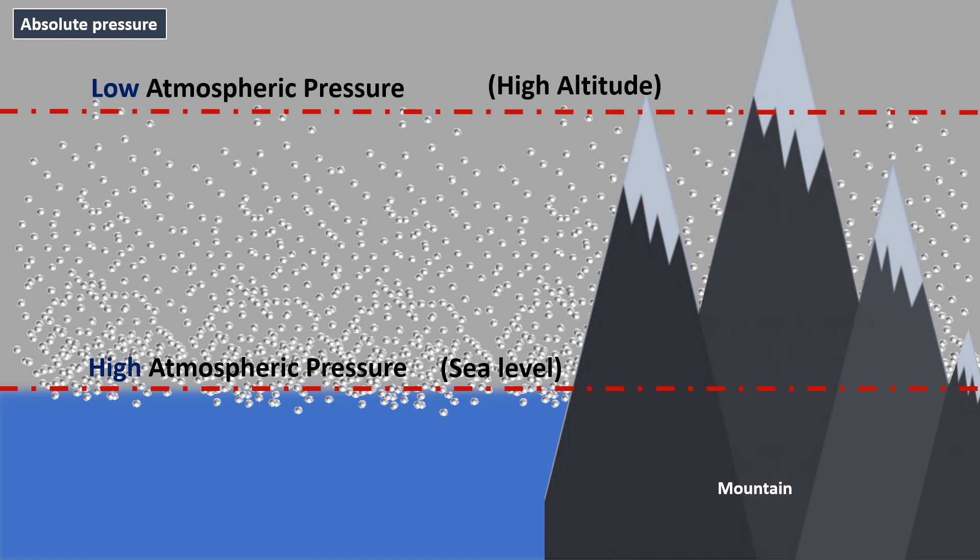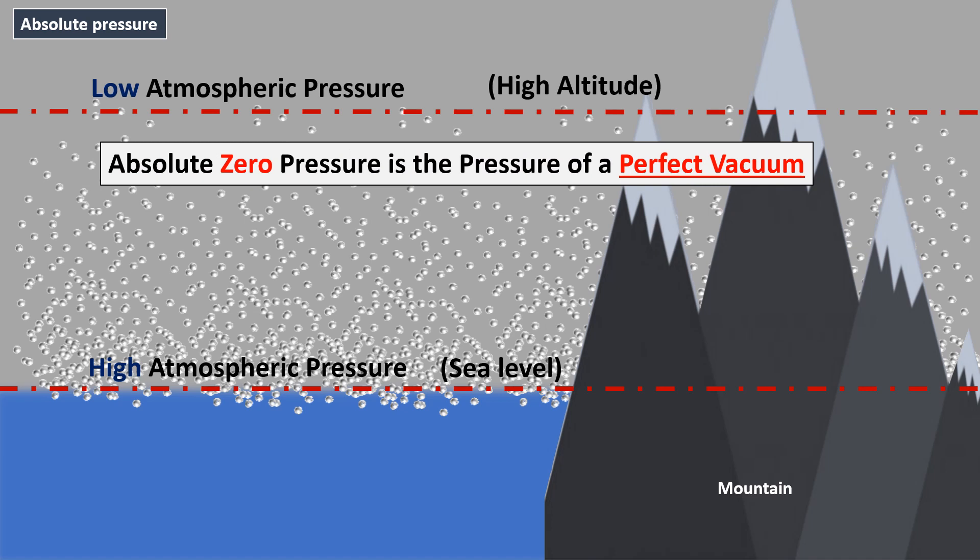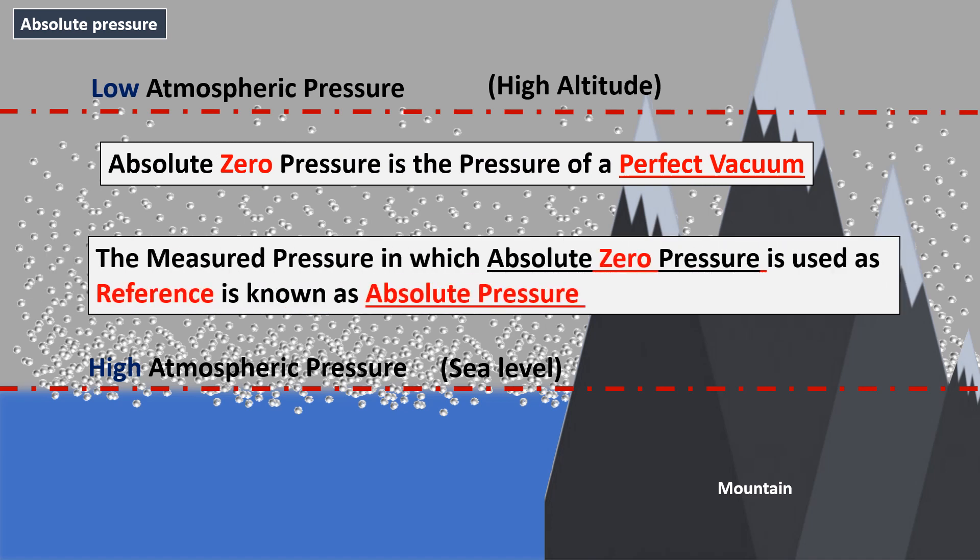So here absolute zero pressure is used as the reference. Absolute zero pressure is the pressure of a perfect vacuum. The measured pressure in which absolute zero pressure is used as a reference is known as absolute pressure.